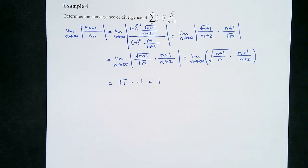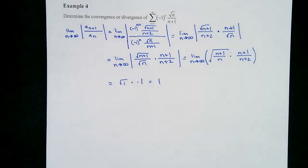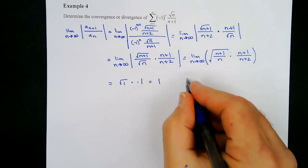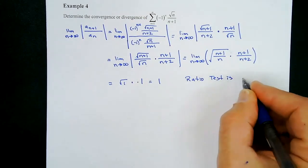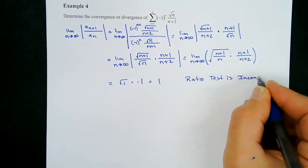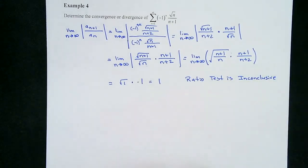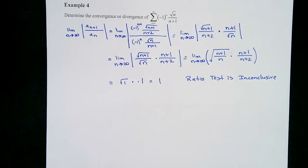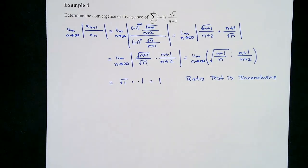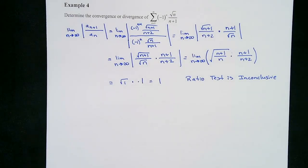What does the ratio test tell us when this limit comes out to be 1? It's inconclusive — it doesn't tell us the series diverges, but it also doesn't tell us it converges. We still don't know anything about this. The ratio test is an utter failure here, and part of it is because we don't have exponentials and we don't have factorials.